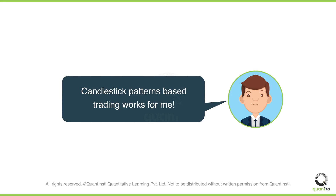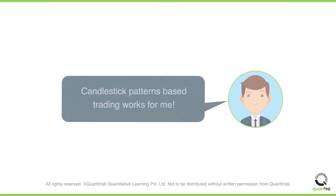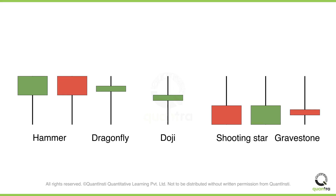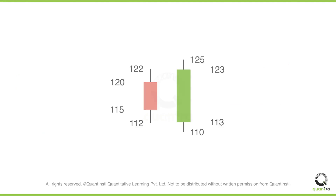There are multiple kinds of candlestick patterns that traders use. Firstly, we have single candlestick patterns, wherein the candle structure itself reveals certain aspects such as the level of bullishness, bearishness, or indecision in the market. On the other hand, you can also have patterns where we compare the recently formed candle with the previous one to draw a conclusion. These are commonly referred to as multiple candlestick patterns.